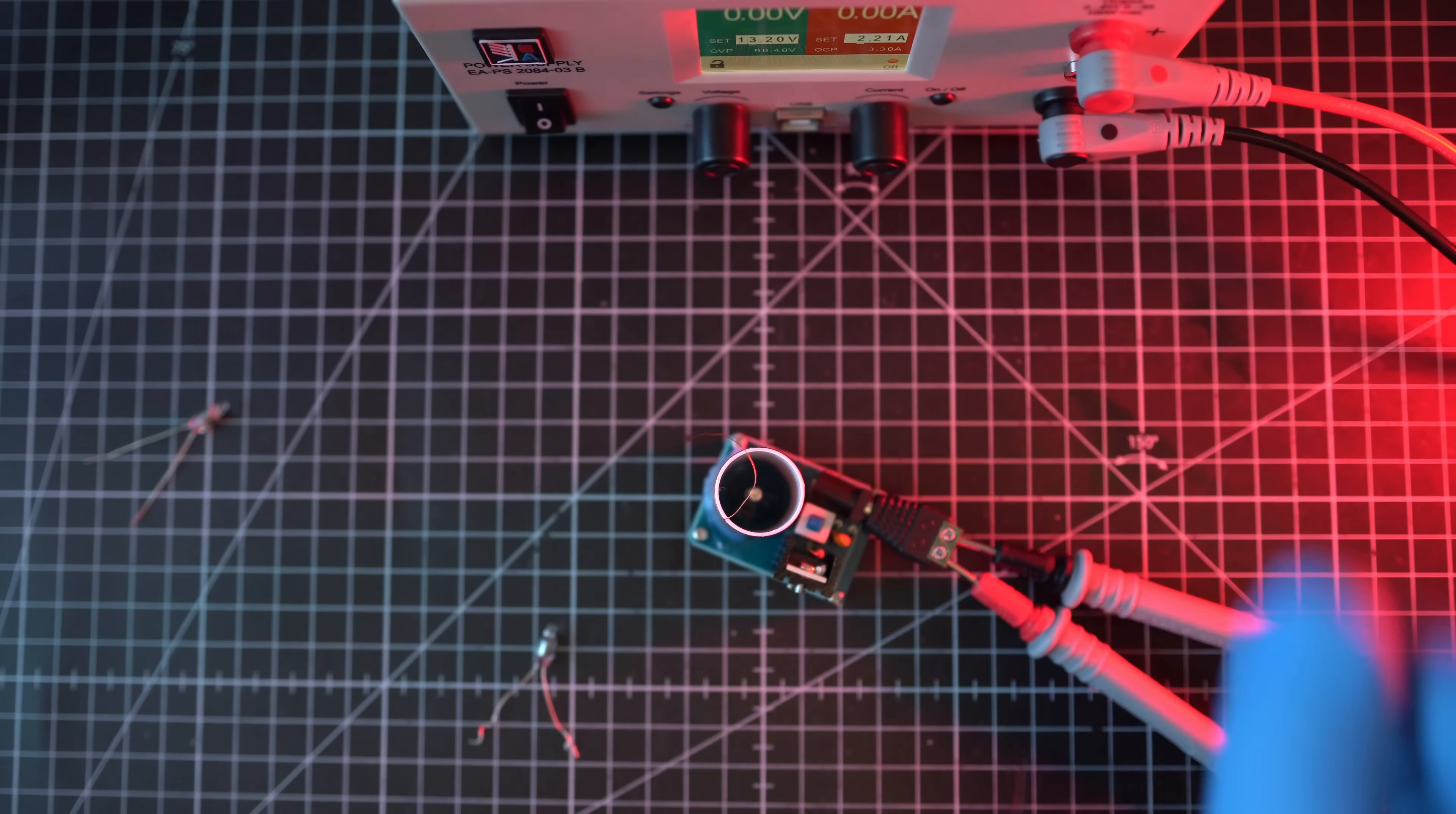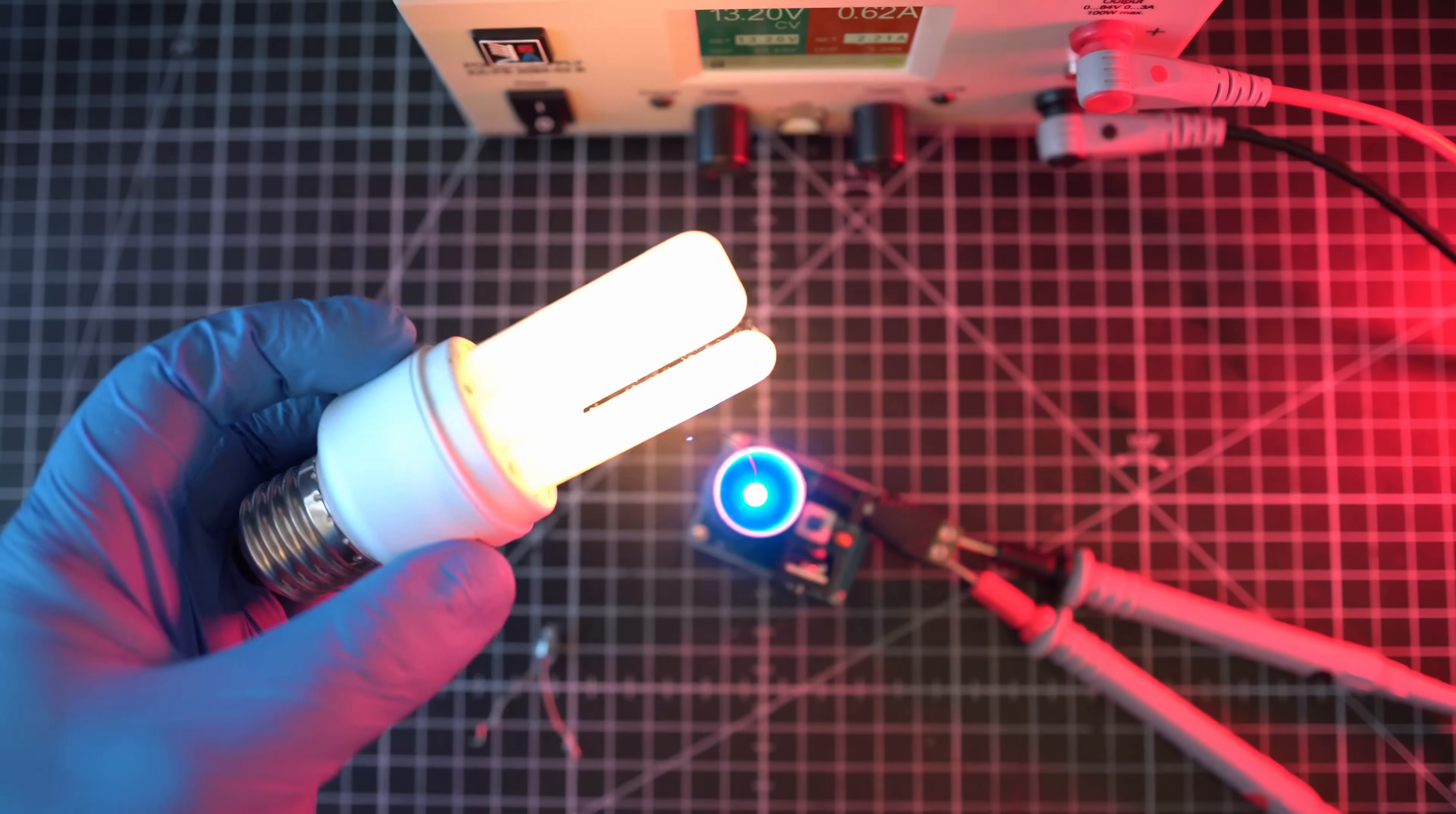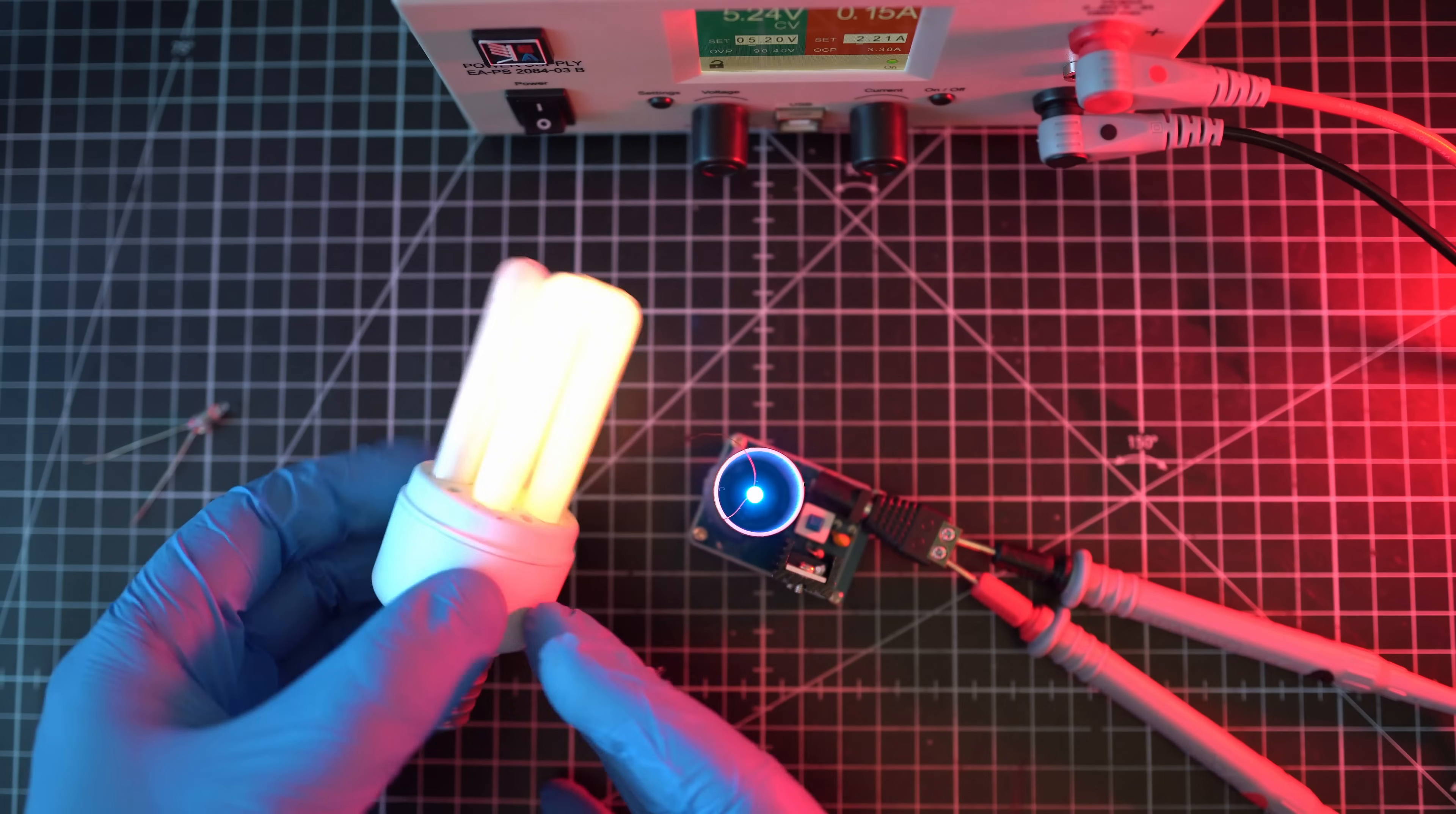So next thing to test is larger light bulb. Same halogen type. Let's try. Oh yeah. It's on. Beautiful. Even at 5 volts. 5 volts is USB power by the way. Super cool.